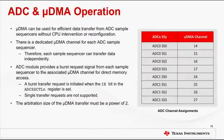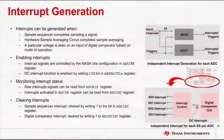The ADC modules in TM4C123X microcontrollers also feature eight dedicated microDMA channels for ADC sample sequencers. MicroDMA can be used to effectively transfer data from ADC sample sequencers without CPU intervention or reconfiguration. The ADC module can also generate interrupts when a sample sequencer completes sampling, when the hardware sample averaging circuit completes averaging, or when a particular voltage is seen on the input of the digital comparator based on the mode of operation. The register configurations of the sample sequencers and the digital comparators dictate which events generate raw interrupts, but do not control whether the interrupt is actually sent to the interrupt controller.